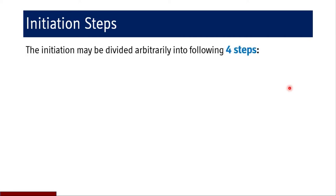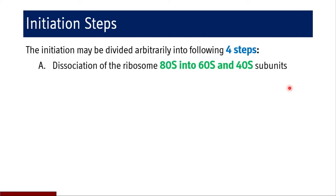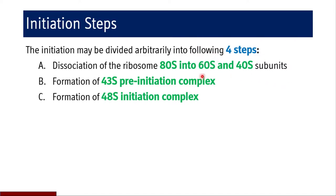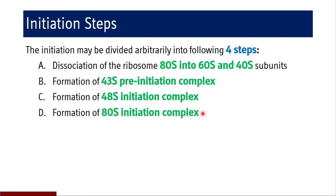Coming to the initiation steps. The initiation of translation may be divided into four steps: first, dissociation of the 80S ribosome into 60S and 40S subunits; second, formation of the 43S pre-initiation complex; third, formation of the 48S initiation complex when the 43S combines with mRNA; and fourth, combination of the 48S initiation complex with the 60S subunit to form the 80S initiation complex, which leads to elongation.